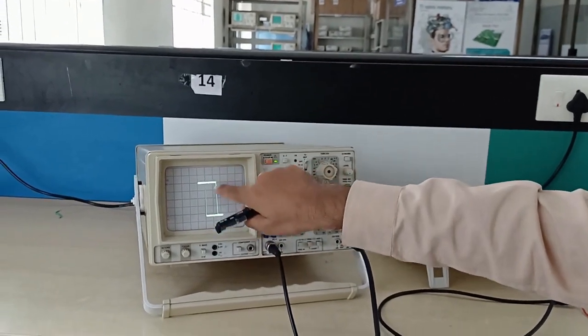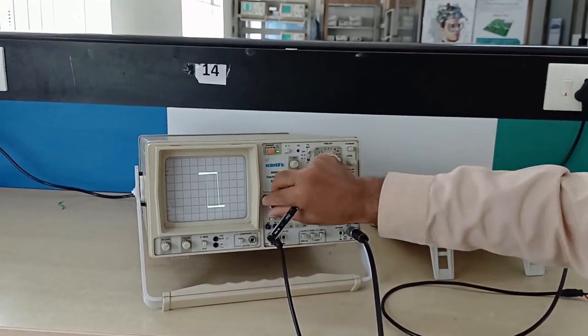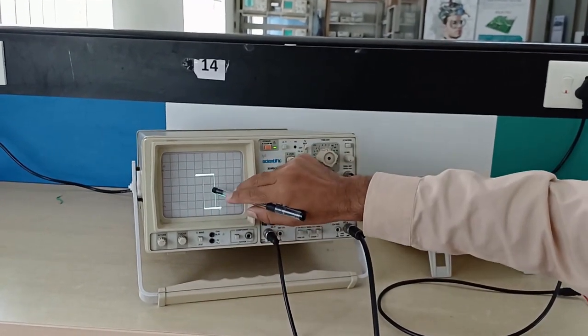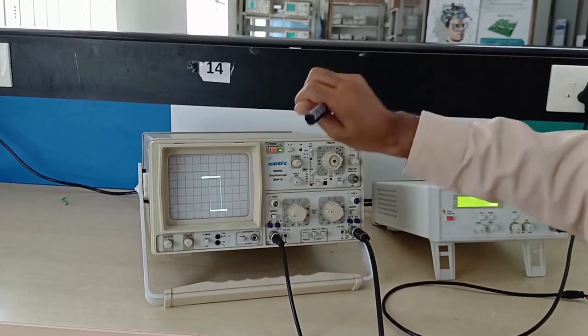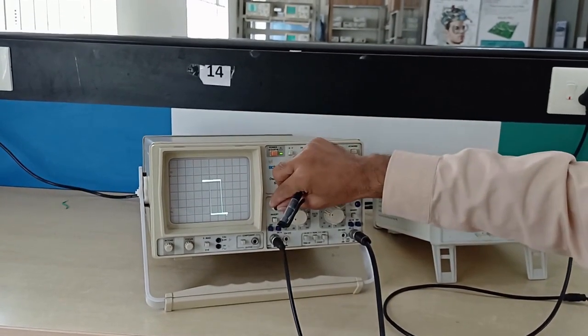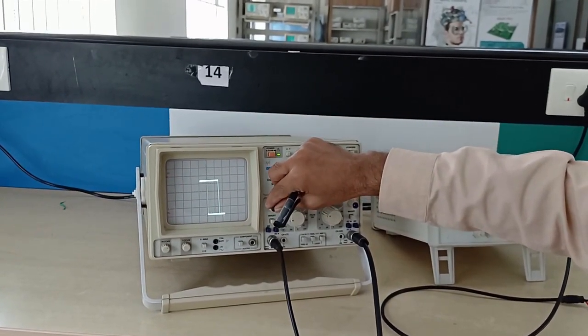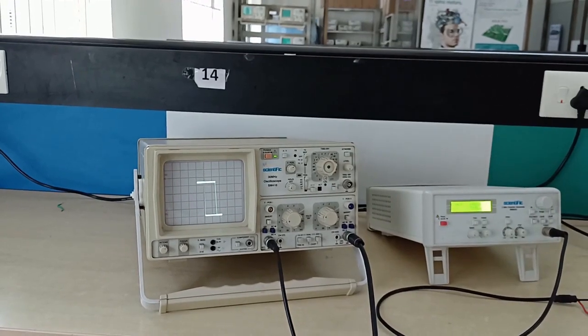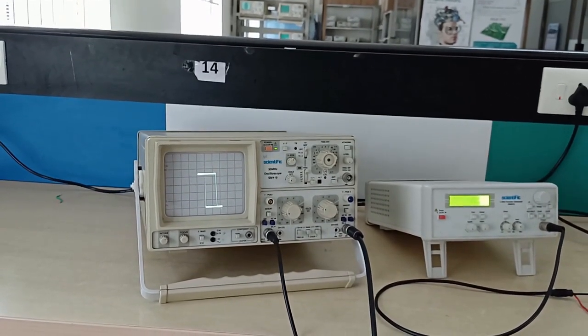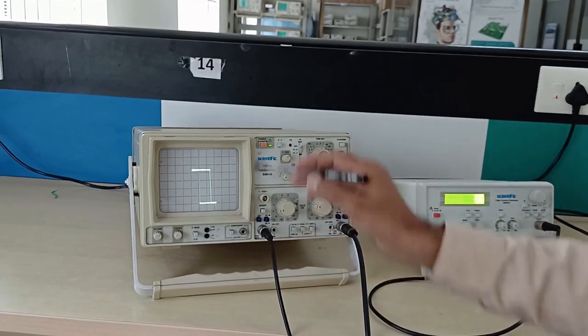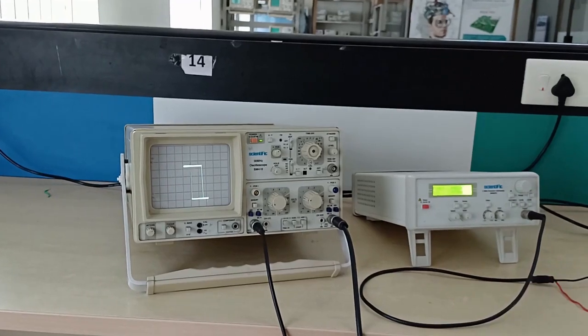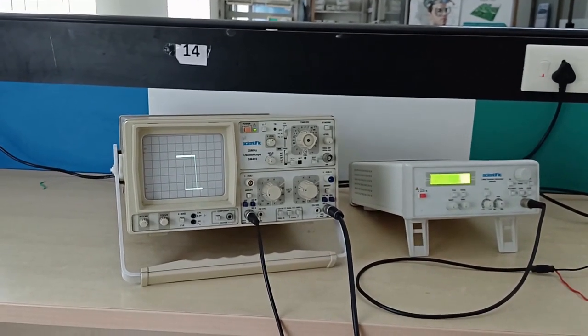And plus or minus Vsat, you can measure this saturation voltage: 1, 2, 3, 4.4. 4.4 into 5 is 22 volts, right? Peak to peak 22 volts. By 2 is 11 volts. Plus Vsat minus Vsat is plus or minus 11 volts is the saturation voltage.